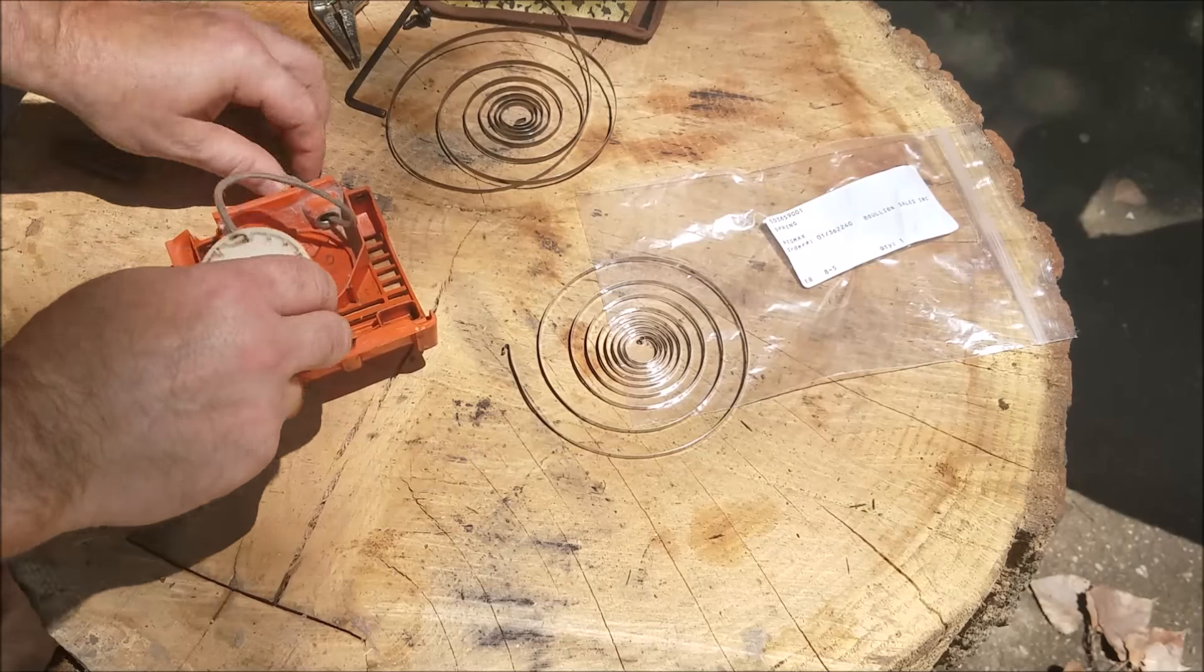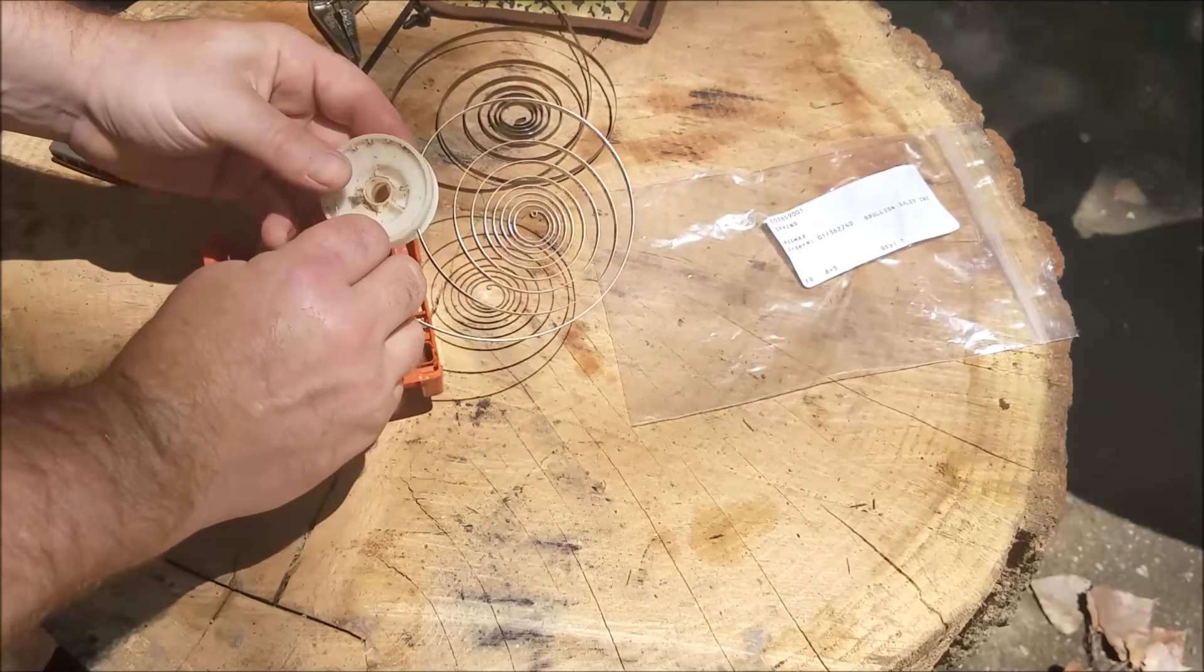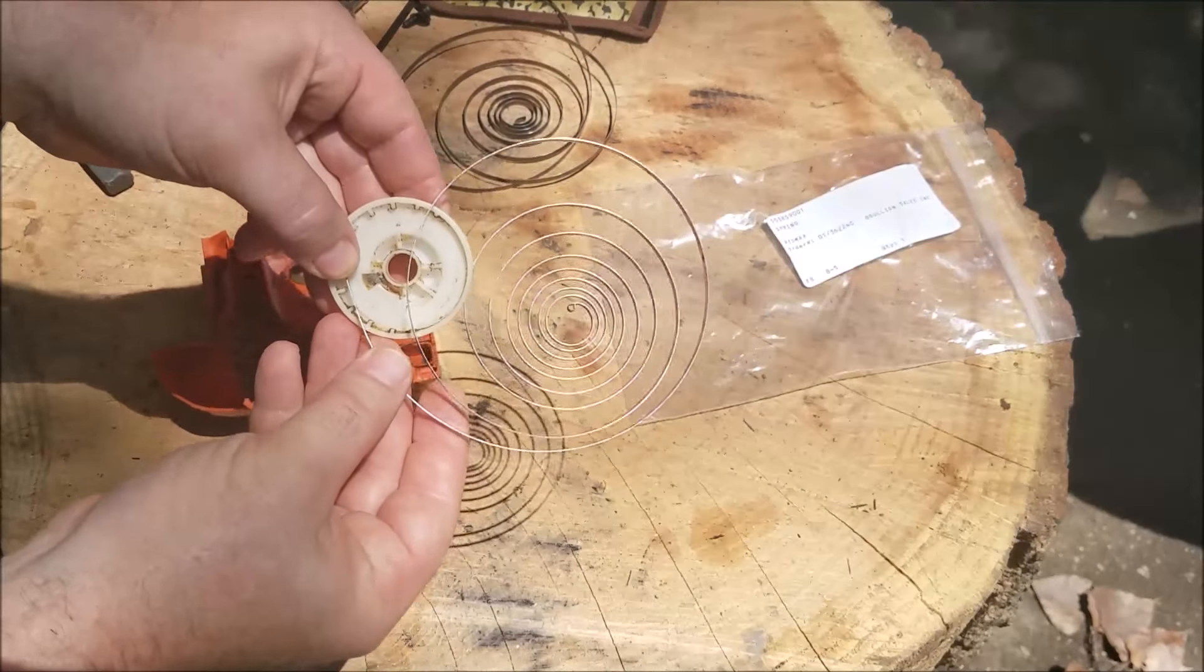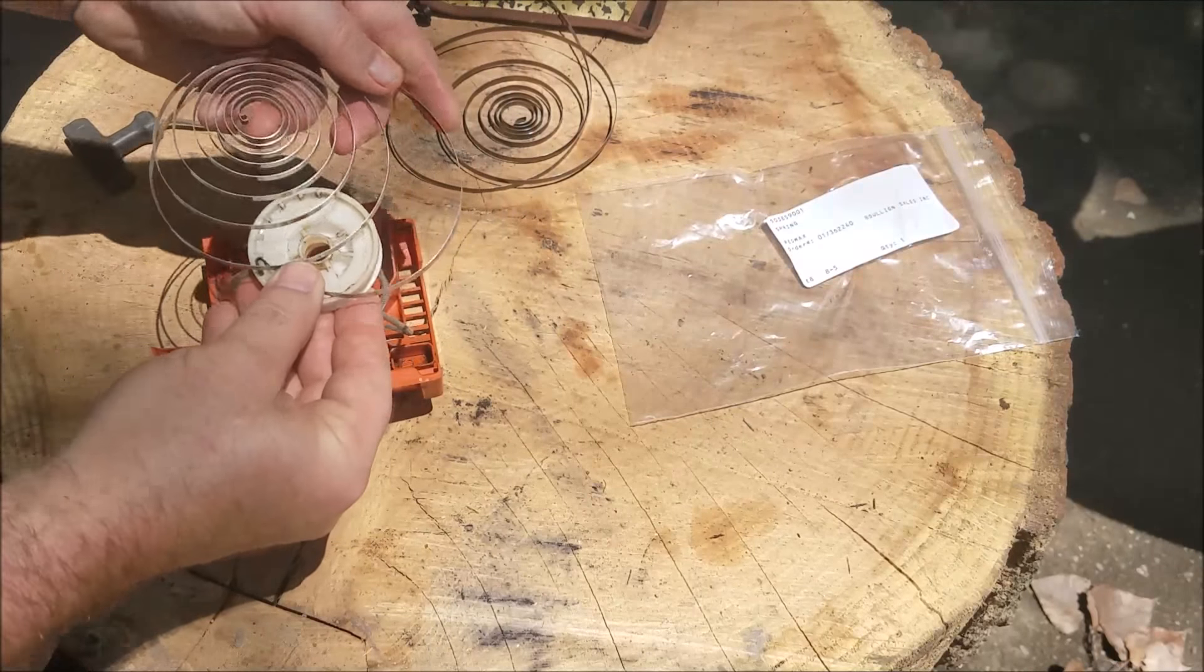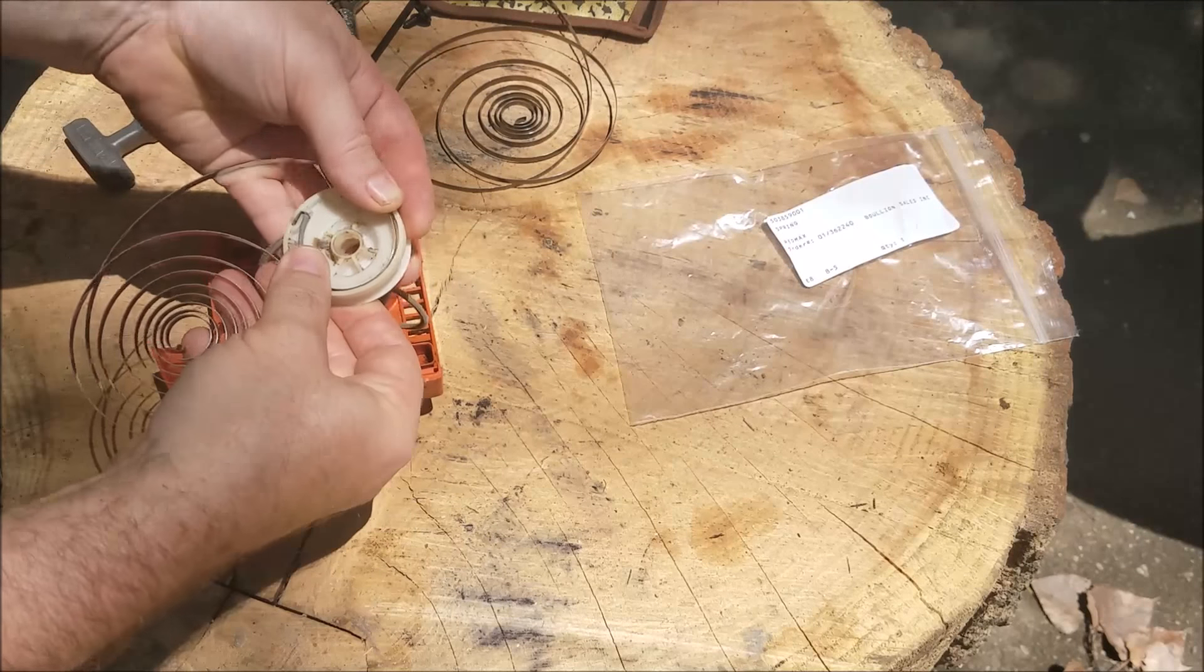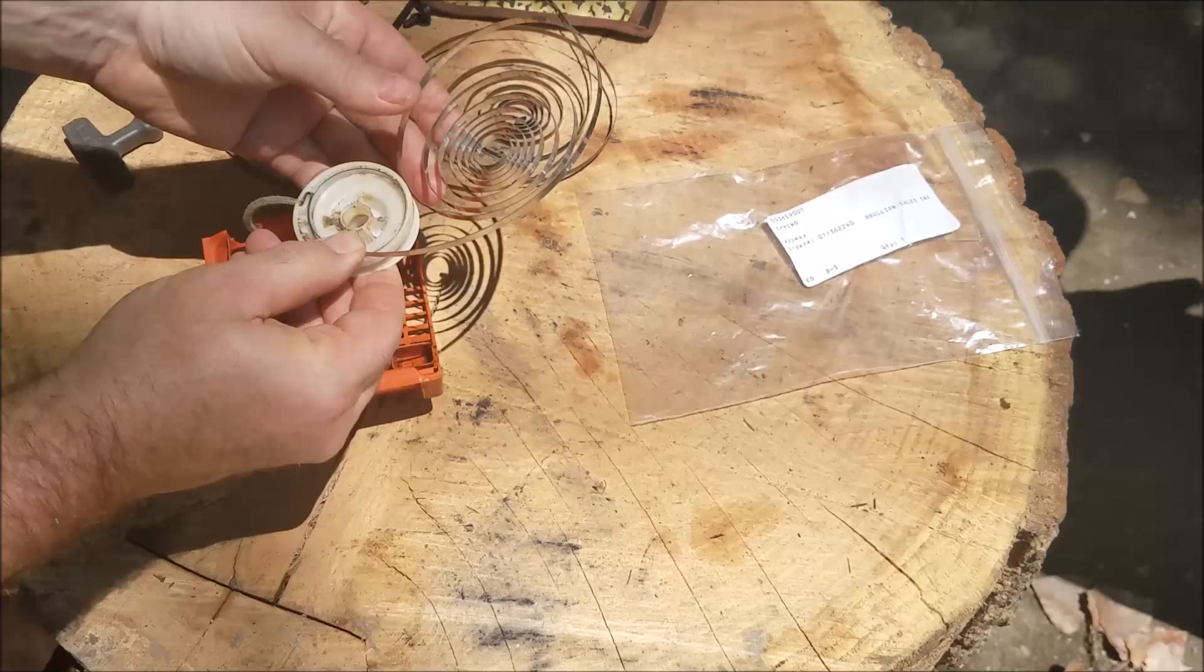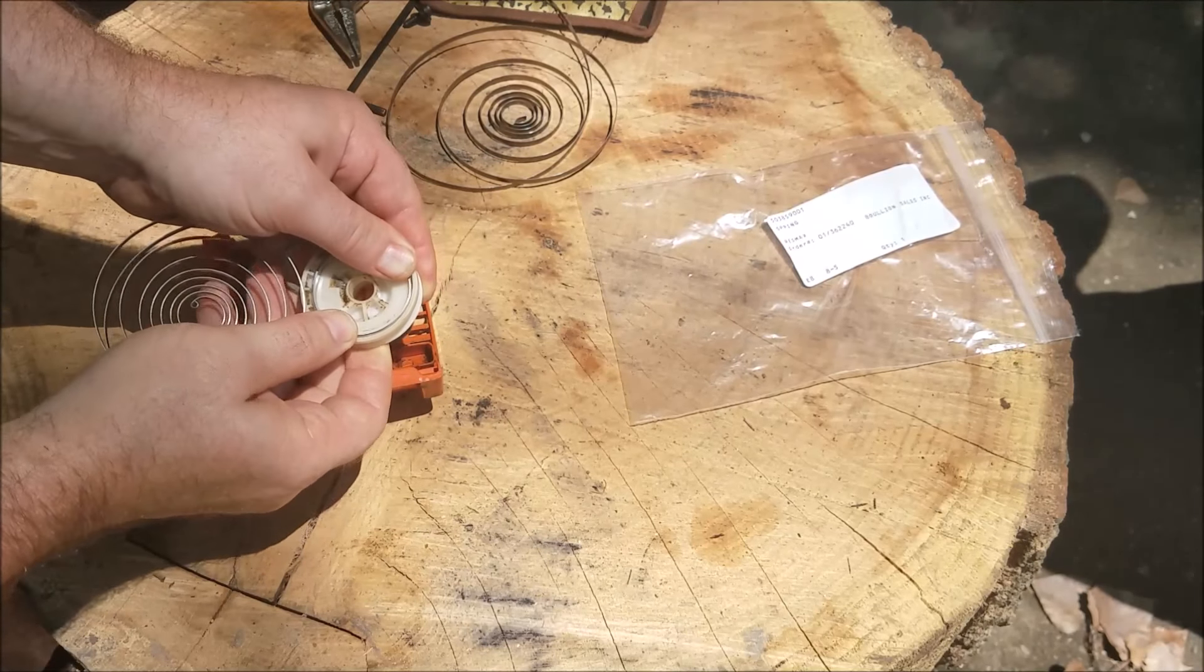What we're going to do is start on the outside of the spring and you're going to hook it in the little hook there, like so. Try to keep the spring on the top and just start winding this around.